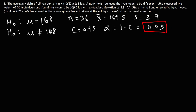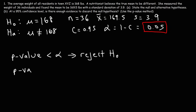To use the p-value method, we calculate the p-value, which represents the area corresponding to the z or t test statistic. If the p-value is less than alpha, we reject the null hypothesis. If the p-value is equal to or greater than alpha, we fail to reject the null hypothesis. That's the p-value method.